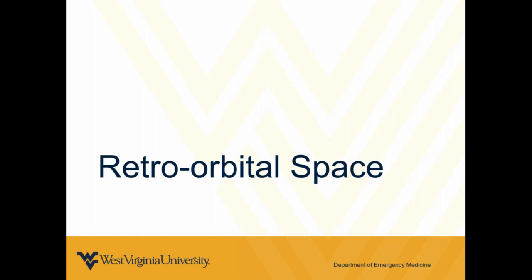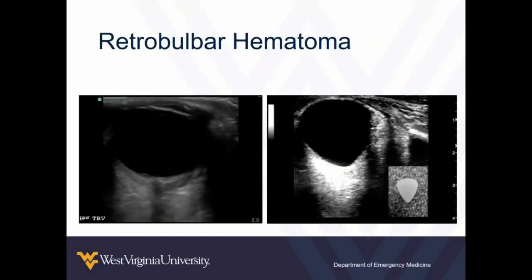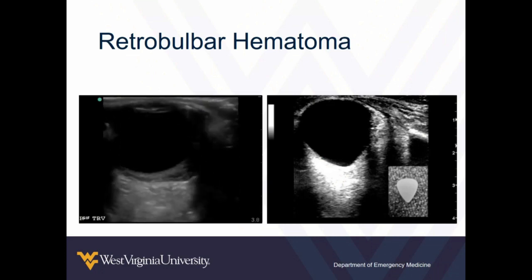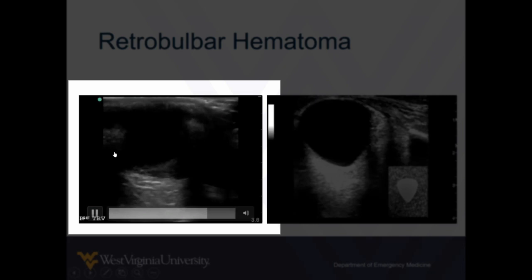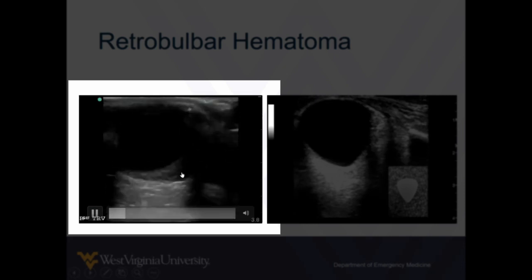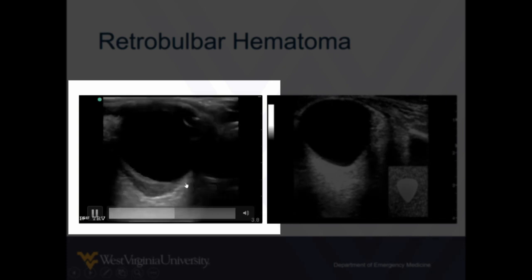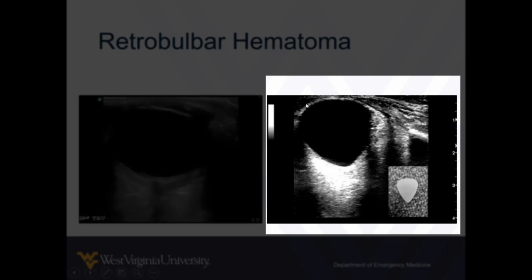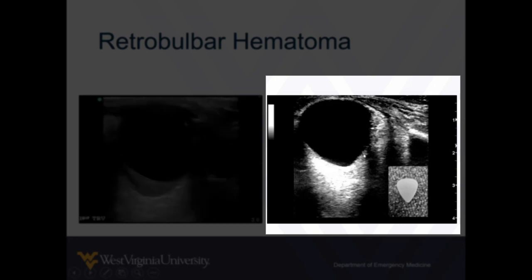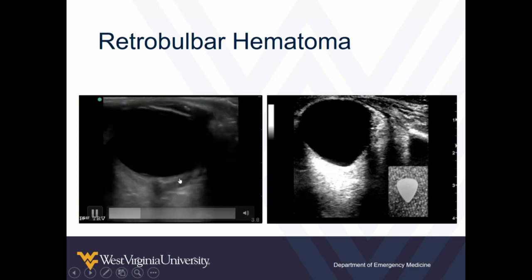Just a couple of things we can recognize in the retroorbital space. In some scenarios, patients have either infectious processes or trauma that causes bleeding in the retroorbital space, and we can recognize that with ultrasound. Here we can see some blood that's behind the globe itself. Or sometimes you might see what's been called the guitar pick sign, where there's swelling from either an infectious process, tumor, or blood that's distorting the shape of the eyeball so it looks a little bit like a guitar pick. Those are some of the things you can recognize in the retrobulbar space.